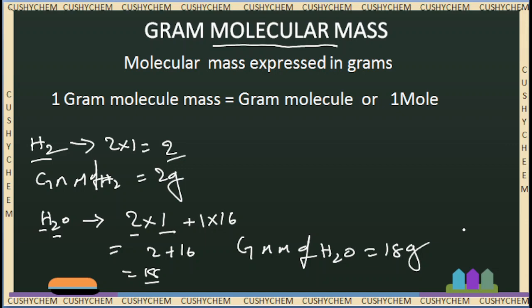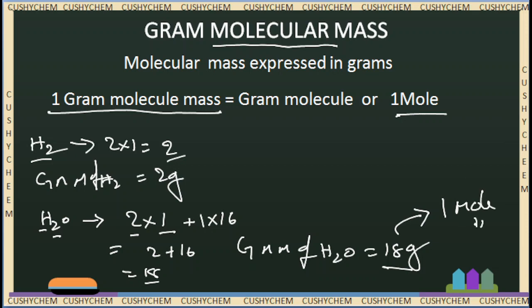The gram molecular mass can be considered as 1 mole. So 18 grams of water can be considered as 1 mole of water. Similarly, 2 grams of hydrogen is equal to 1 mole of hydrogen gas. That means gram molecular mass expressed in grams is equal to 1 mole.